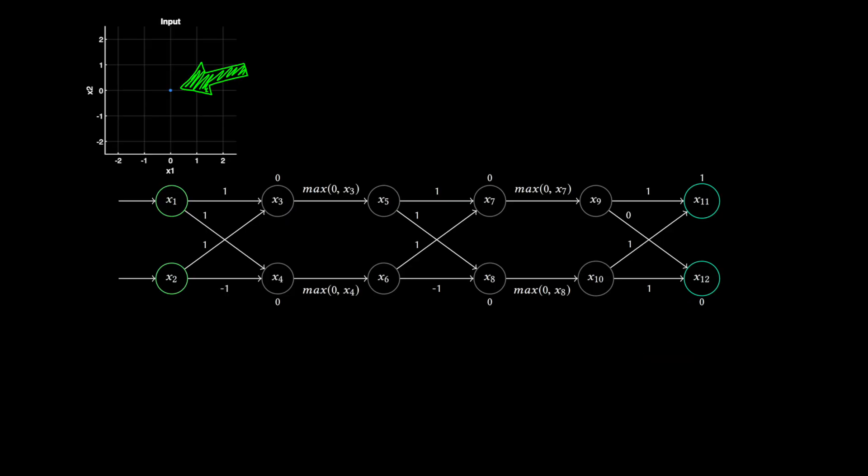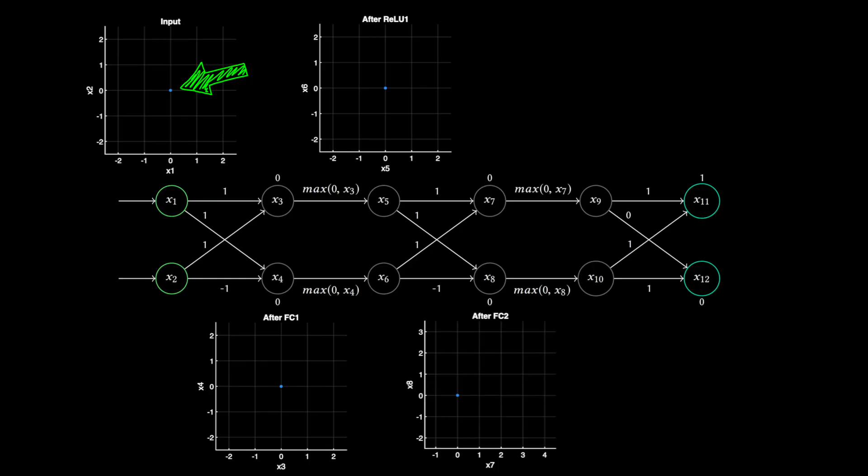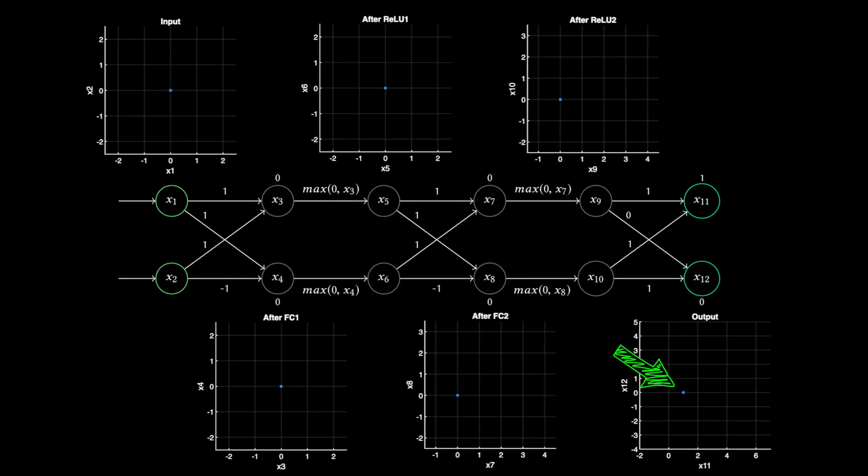So as a quick example, if we set both inputs to zero, we can then trace the math through the layers and then see that the output of the network is x11 is one and x12 is zero. Now we can claim that since x11 is greater than x12, this network would assign whichever label is associated with x11. For example, maybe x11 being large represents a car in this two pixel image. So a zero zero input corresponds to a car.